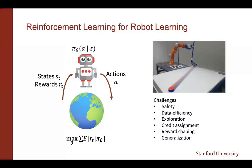We also have an exploration problem, which is linked to safety because we can't let the robot randomly explore its environment. There's a credit assignment problem that is more pronounced due to data efficiency limitations — in typical RL, you can sample a lot of online data, but with data efficiency constraints, credit assignment also becomes a problem. Another issue is reward shaping: unlike games, we don't have a nice reward given by the game, so we have to engineer a reward function that helps us learn efficiently.